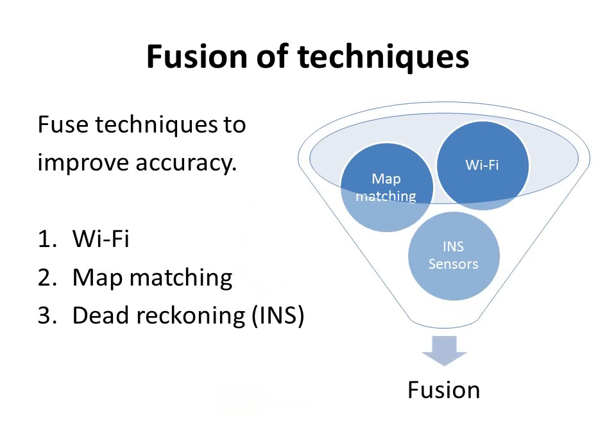So, to build a robust indoor positioning system, we have to fuse or combine the earlier techniques — Wi-Fi, map matching, and dead reckoning.